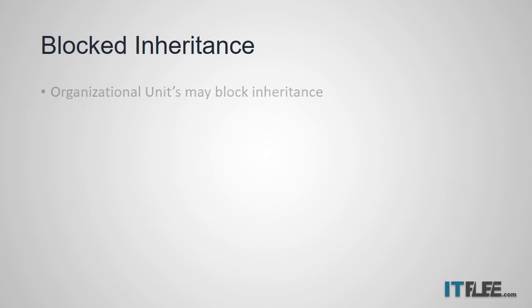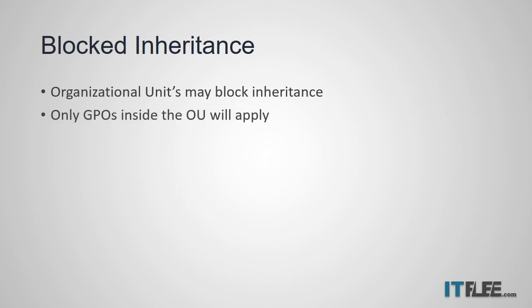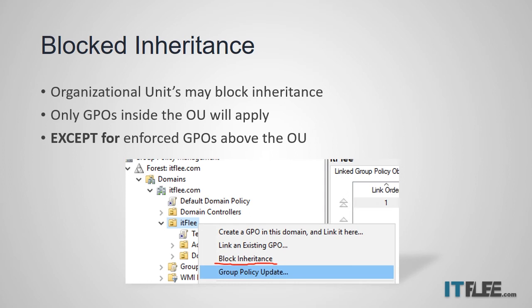Within group policy there is something called blocked inheritance. This is a term used when it comes to organizational units — an OU can block its inheritance, which means only GPOs inside of that OU will apply, except for enforced GPOs that are above the OU. To block inheritance, you simply right-click on the OU and choose block inheritance. In this example, the Test GPO inside the OU would still apply, but the default domain policy would not apply.